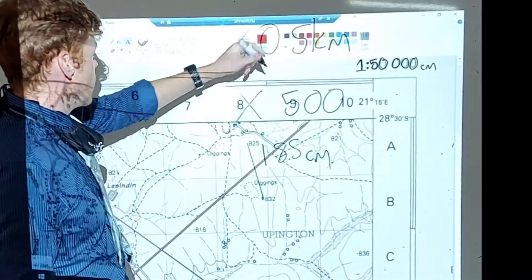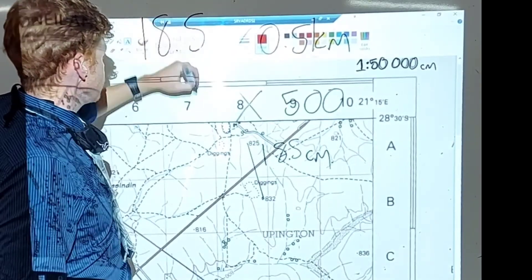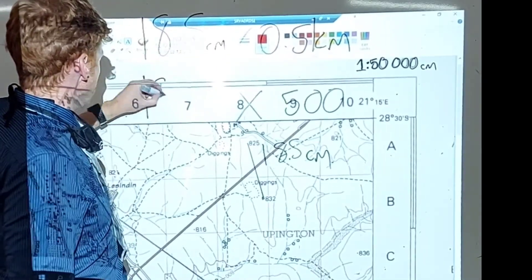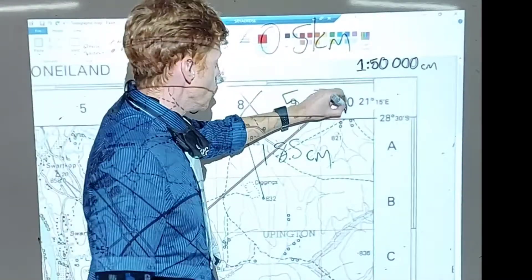So what do we do? We want the answer in kilometers, we take 18.5 centimeters times 0.5, or 18.5 times 500 for meters.